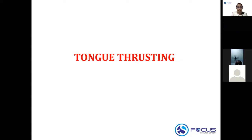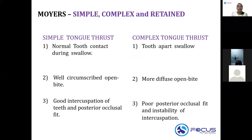We'll move on to the next habit: tongue thrusting. There are certain things you need to know. Basically, you have simple tongue thrusting and complex tongue thrusting, and then a classification called retained tongue thrusting. This classification into simple, complex, and retained is given by Moyers.